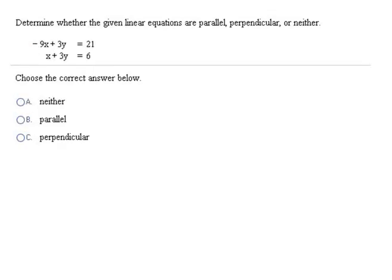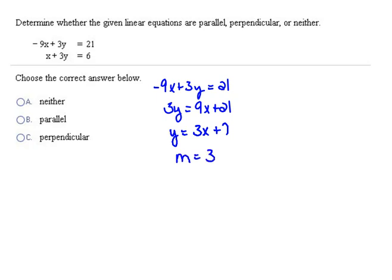Let's try one more example. Here it says, determine whether the given linear equations are parallel, perpendicular, or neither. So in order to do that, we need to get our equations in the right order, so that we can see it. So I've got my first equation here. Let's solve it for y. So we'll have 3y equals, add 9x to both sides. Now we're going to divide by 3, so y will equal 3x plus 7. The slope here is 3.